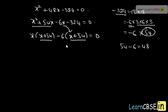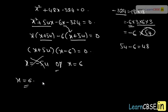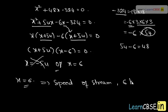Taking (x plus 54) common, we get (x plus 54)(x minus 6) equals 0. Equating each factor to zero gives x equals negative 54 or x equals 6. Since speed cannot be negative, we discard x equals negative 54 and take x equals 6. Therefore, the speed of the stream is 6 kilometers per hour. This completes our solution.